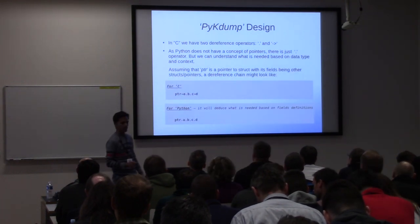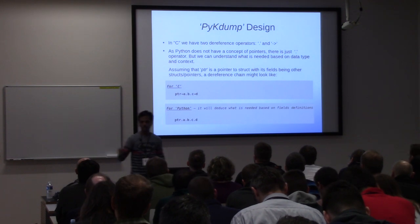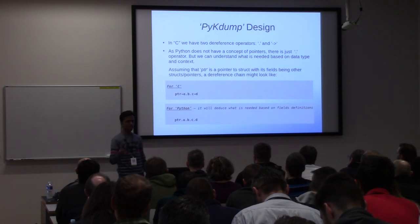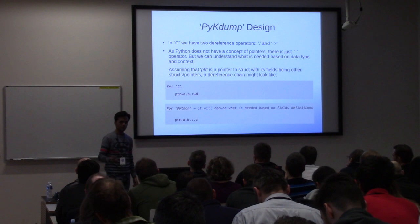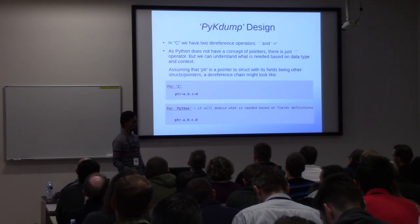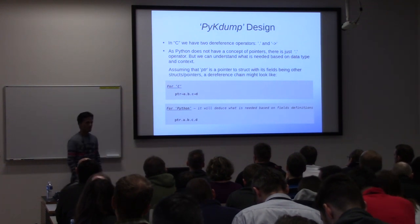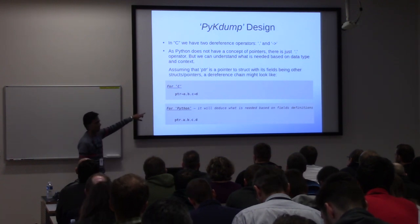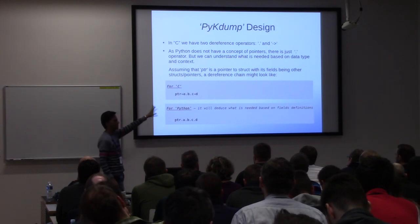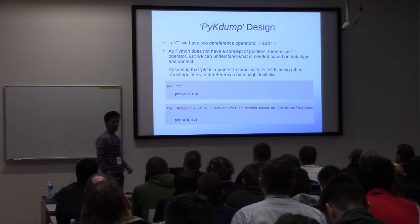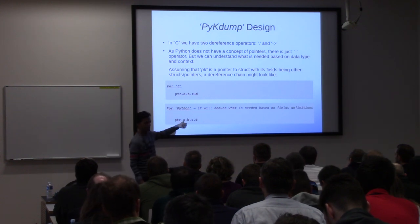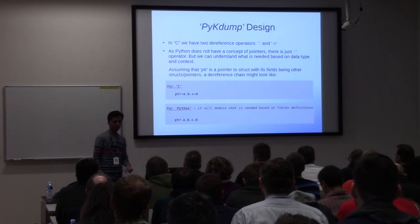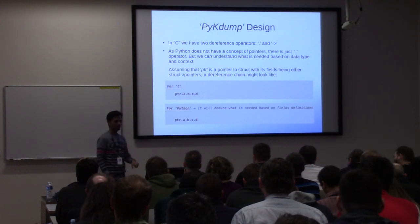One caveat while talking about operators: C provides two very powerful operators — the dot and the arrow — to dereference a pointer and to access a member variable directly embedded within a structure. Python doesn't have these two operators; it just has a dot. In PYKDUMP framework, a dereference chain like `pointer->A->B.C->D` in C would simply be written as `pointer.A.B.C.D` — the framework is intelligent enough to identify whether you are dereferencing a pointer or just accessing a member variable embedded within a structure.